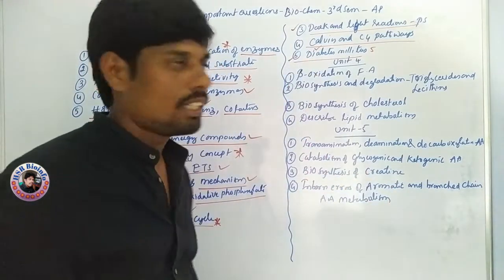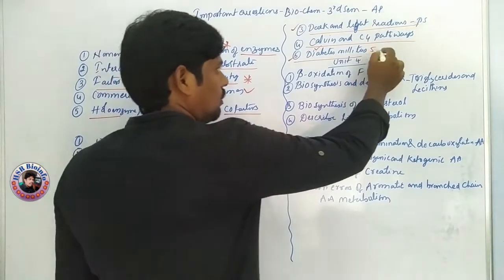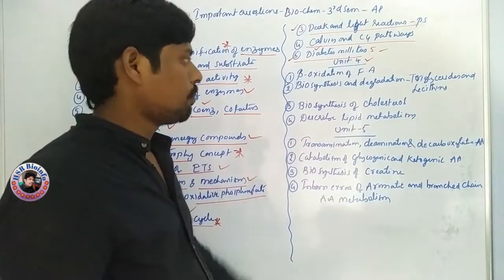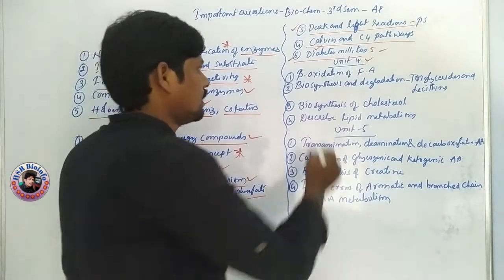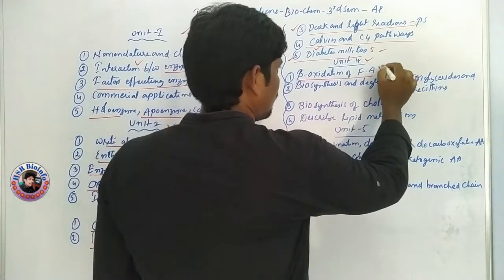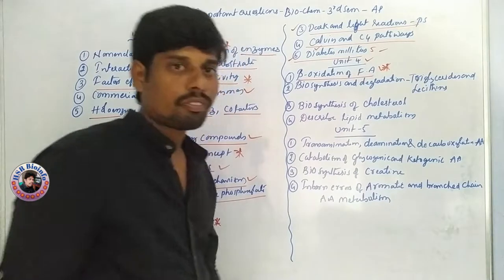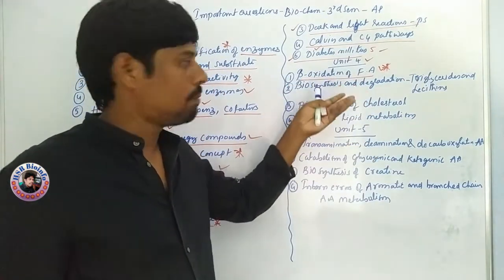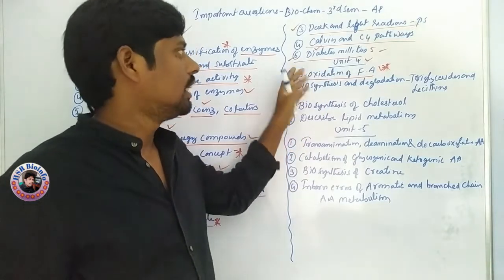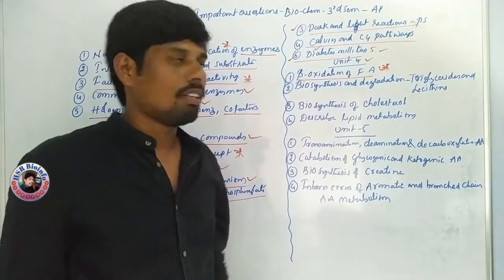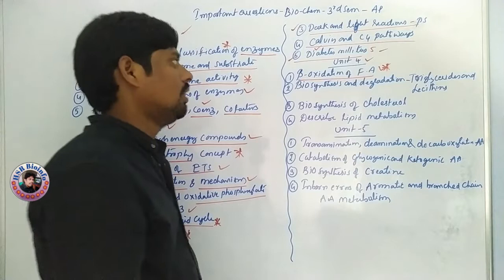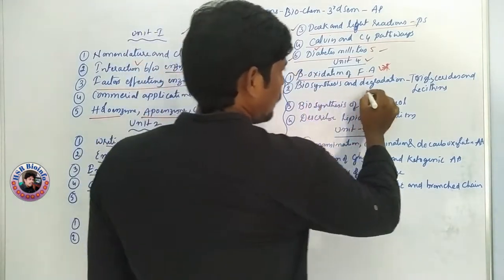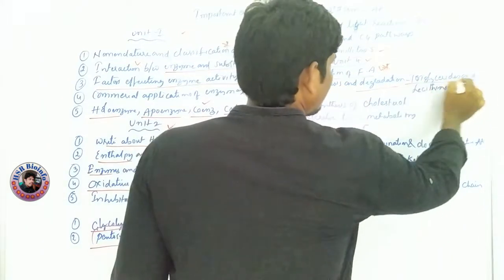The question is 10 marks — this is important. The next question is beta oxidation of fatty acids — very, very, very important. If you are interested in fatty acids, if you are interested in fatty acid direct beta oxidation, this is a very important question worth 10 marks.